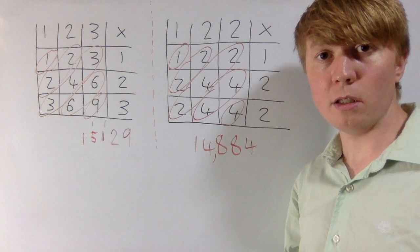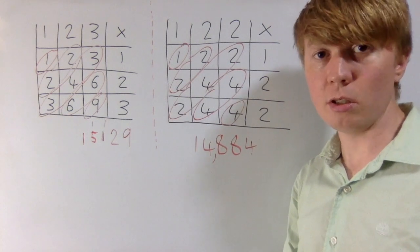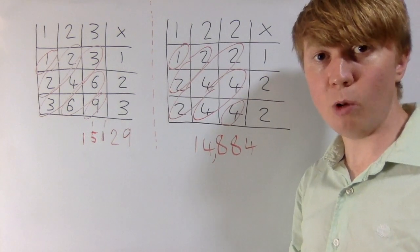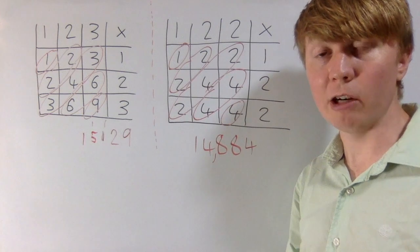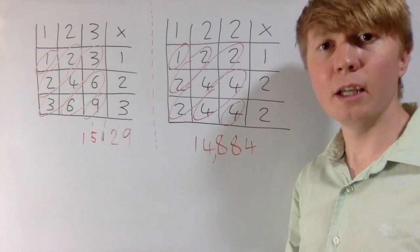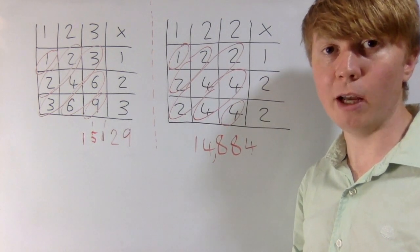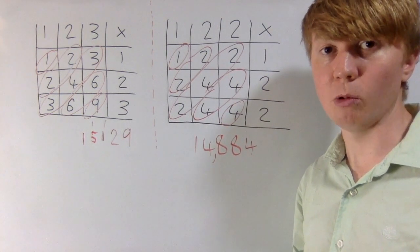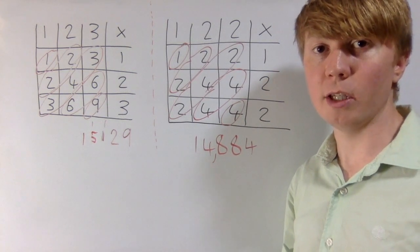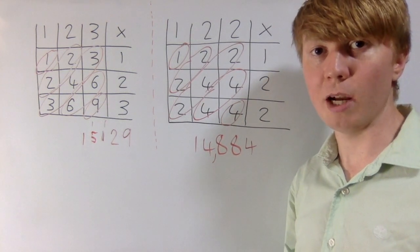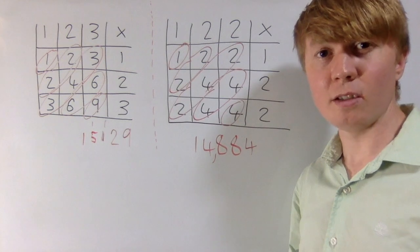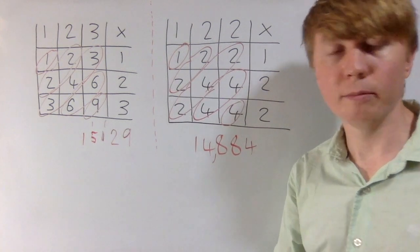So the actual answer to this problem is just as simple as saying: any number where, when you square it, you have to carry isn't going to satisfy our rule. And any number where you can square it without having to carry will satisfy the rule that the sum of digits all squared equals the sum of digits of the square number.